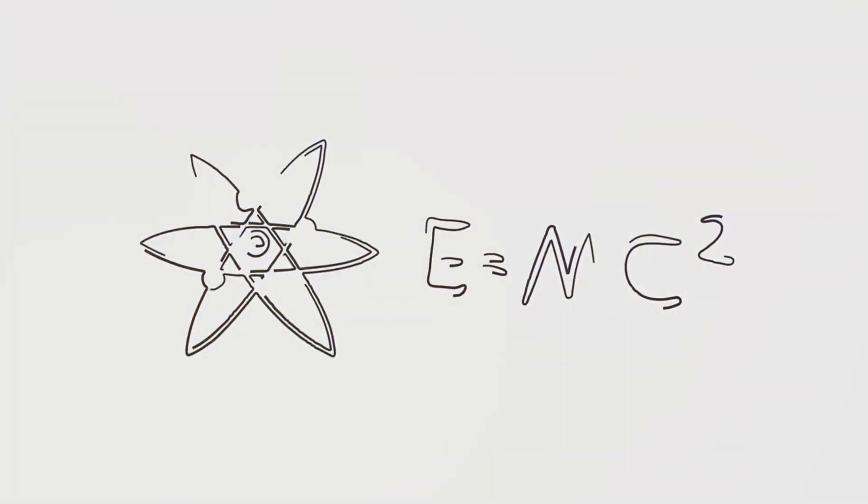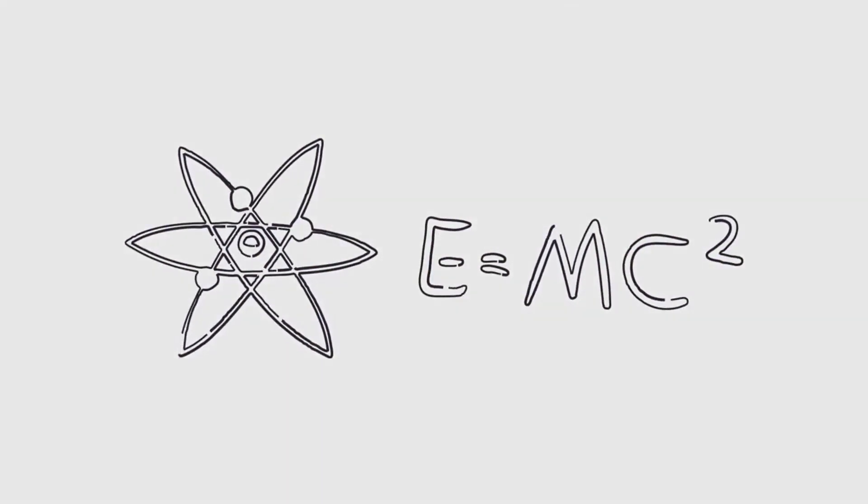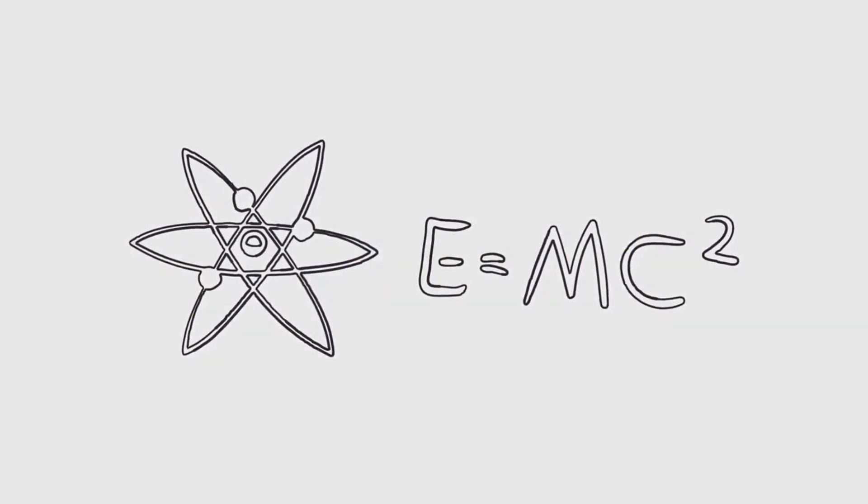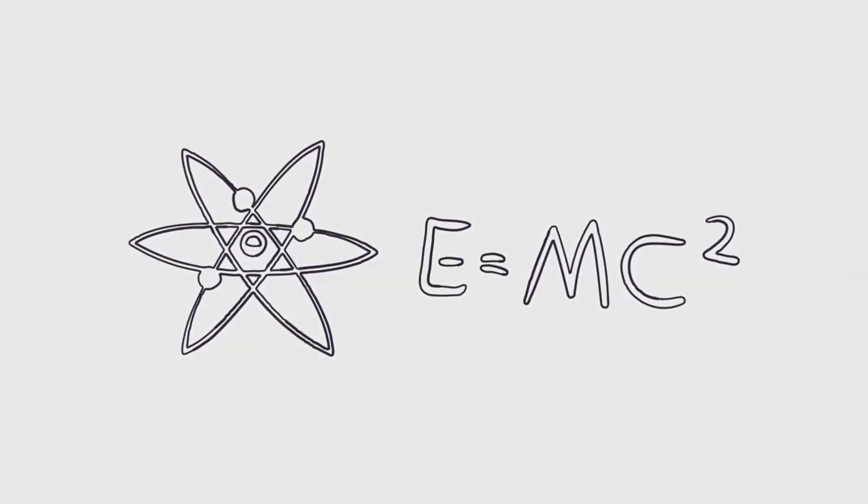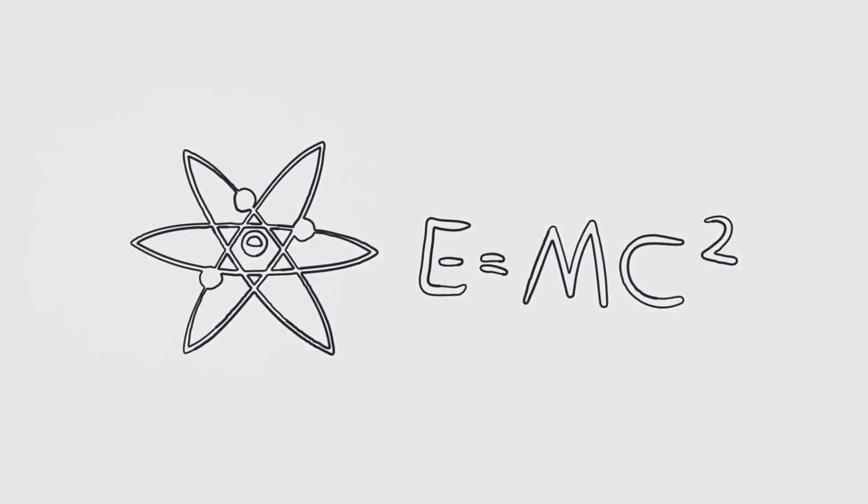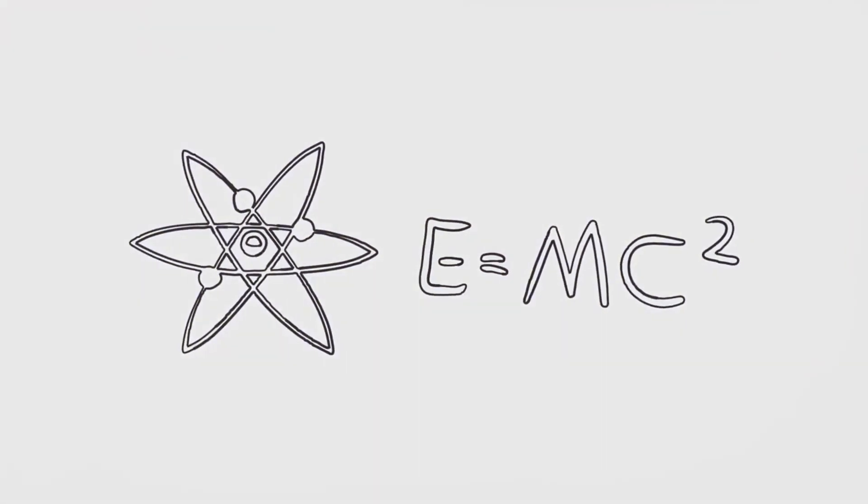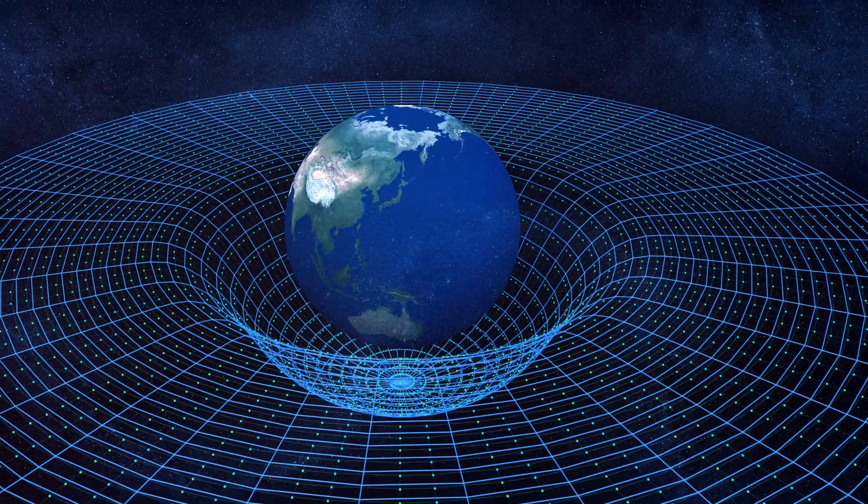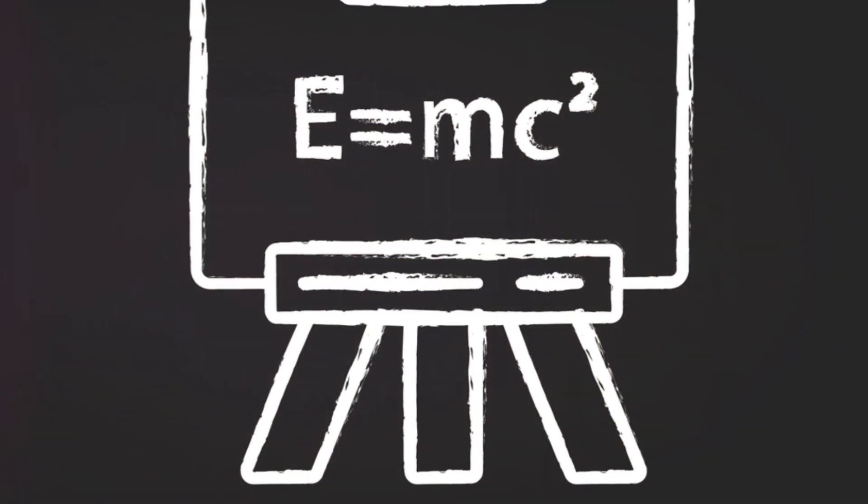This is where things start to get really interesting. The third assumption is that space is homogeneous and isotropic, meaning that it's the same everywhere and in every direction. And the fourth assumption is that time is homogeneous, which means that it flows the same way throughout the universe.